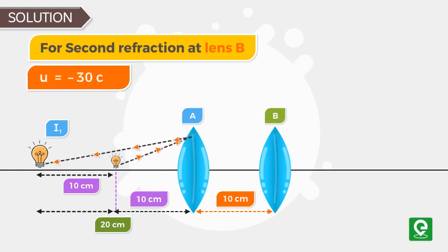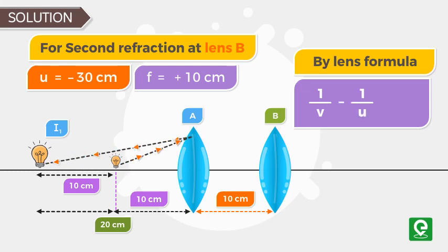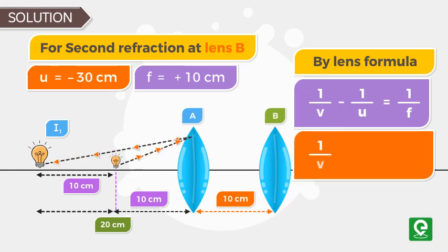For secondary refraction at lens B, the value of U is minus 30 centimeter and focal length is plus 10 centimeter. By lens formula we can write 1 by V minus 1 by U is equal to 1 by F. On substituting the values of U and F we get 1 by V plus 1 by 30 equal to 1 by 10.